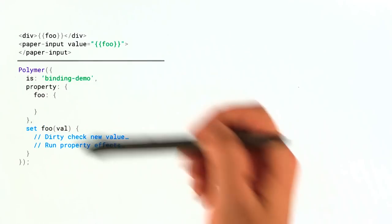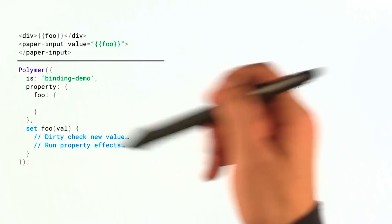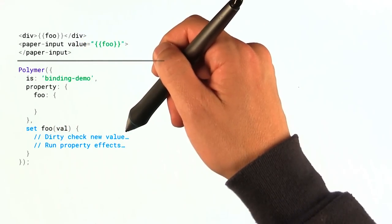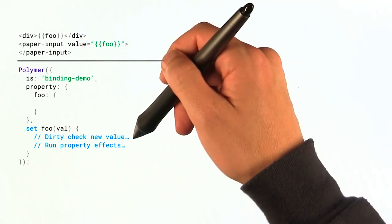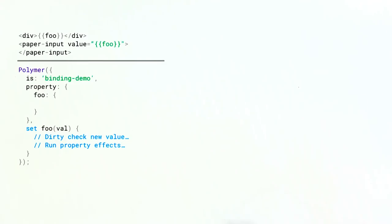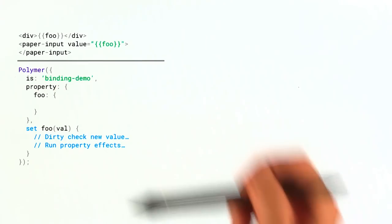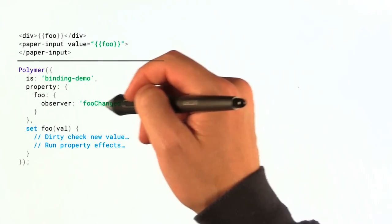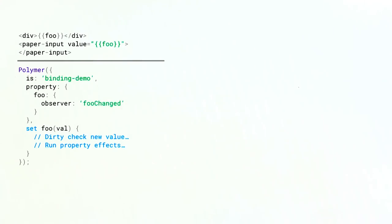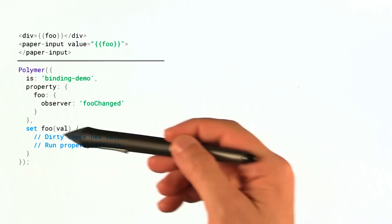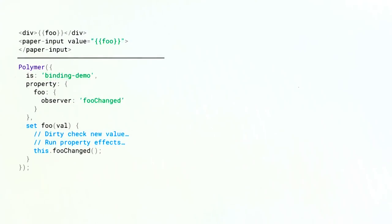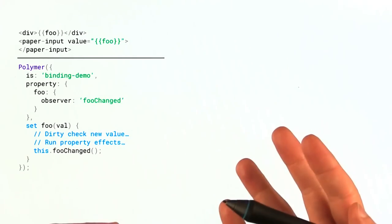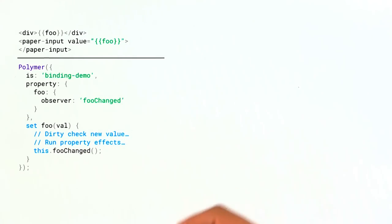So here's our example again. And I've got this properties object now. And I've got my foo property inside of here. And the setter is already set up. So it's going to first dirty check for new values. It's going to run the property effects if things are different. And let's say in my properties object, I add an observer, right? And I say, OK, well, when foo changes, I want you to run this observer function right here. Well, what happens is inside of the setter, Polymer is just going to literally call that function. I know it seems like it might be doing something more magical. But really, this is just it. It's just going to call that function as soon as it's done doing any other work.